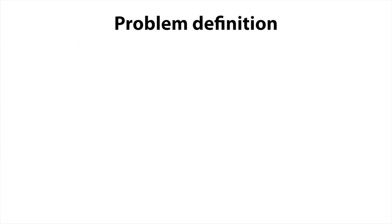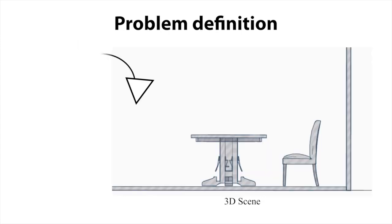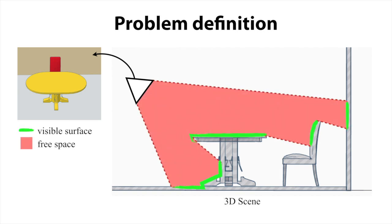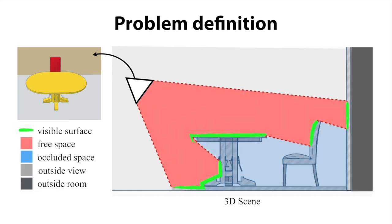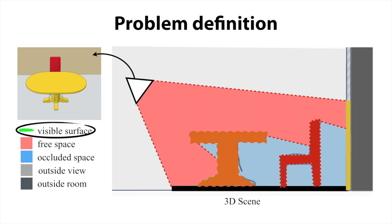Specifically, we define the problem as follows. Given a 3D space and a camera view, we break up the space into the visible surface, free space, occluded space, and space outside the field of view. Our goal is to densely predict the occupancy and semantic labels for all voxels on the visible surface and in the occluded space.